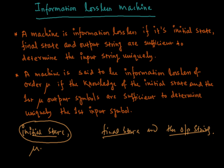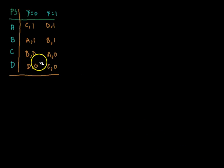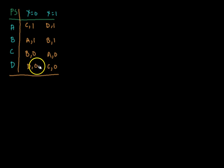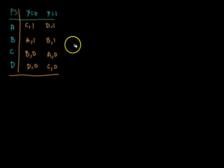If this is the machine, we need to check whether this machine is information lossless or not. By using a testing table and testing graph, we can develop the testing table in this way.